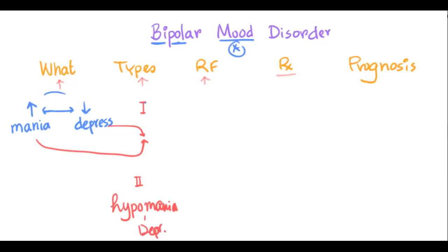Now comes to the risk factor. What are the common factors that increase the risk of getting bipolar mood disorder? And the most important one is the family history of similar disorder.